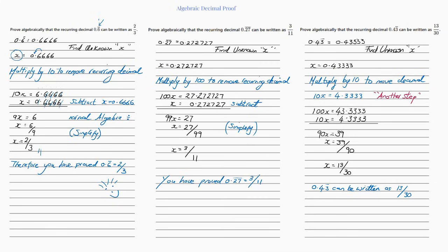Prove algebraically that the reoccurring decimal 0.27̄ can be written as 3 over 11. The only difference here is the reoccurring stops after two numbers behind the decimal place. That first example had one decimal place and we times it by 10, so when there are two numbers behind we multiply by 100. The original I've written out as 0.272727 and I've multiplied it by 100 to remove the reoccurring decimal.